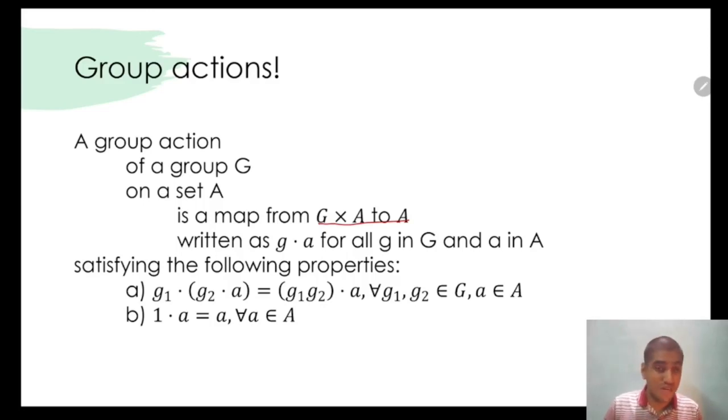Satisfying the following properties: G1 dot G2 dot A is equal to G1 G2 dot A. When we say G1 G2, we mean the group operation between two elements of G. The second condition is very natural: for the identity of the group, one dot A is equal to A for all A belongs to A.